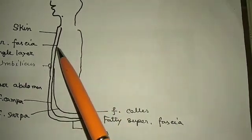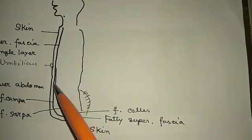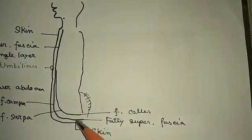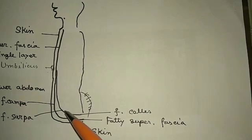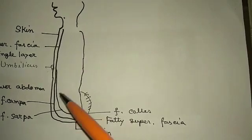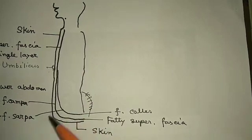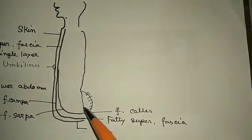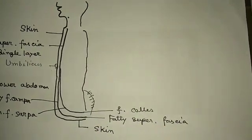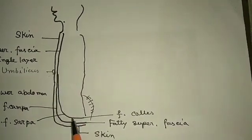This is a mid-sagittal section of the human body. This is skin with a single layer of superficial fascia, but below the umbilicus, this single layer converts into two layers: superficial fatty fascia of Camper and deep membranous fascia of Scarpa. The superficial fatty layer continues as the fatty layer of superficial fascia, but the membranous fascia of Scarpa changes name - in the perineal region it is known as Colles fascia, which is the direct continuation of the membranous fascia of Scarpa.